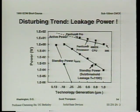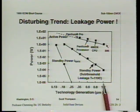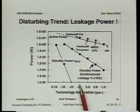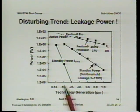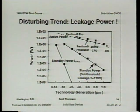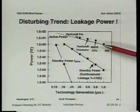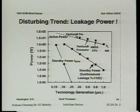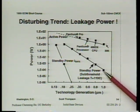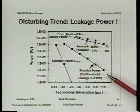This striking curve has technology generation on the horizontal axis — 1 micron, 0.35 micron, quarter micron, and down to 0.18 micron and beyond — and power dissipation on the vertical axis. The top curve is power dissipation of microprocessor chips. The middle curve is standby power from subthreshold leakage as projected in the technology roadmap.